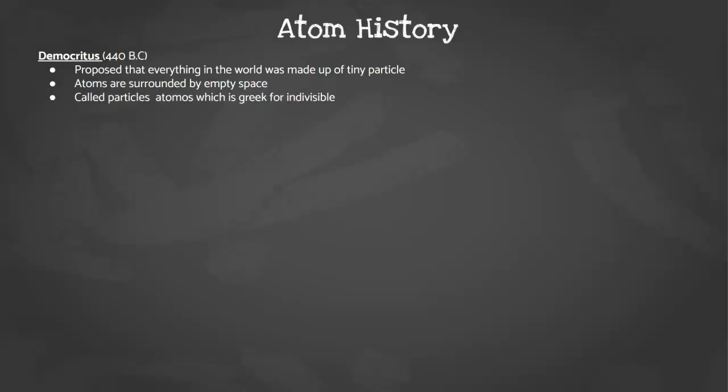A little bit of atom history. Starting from the beginning, we have Democritus around 440 BC. He proposed that everything in the world was made up of tiny particles. He called these particles atomos, which is Greek for indivisible. He also proposed that atoms are surrounded by empty space. At this point in time, they didn't really believe him. In fact, they ridiculed him for his beliefs.